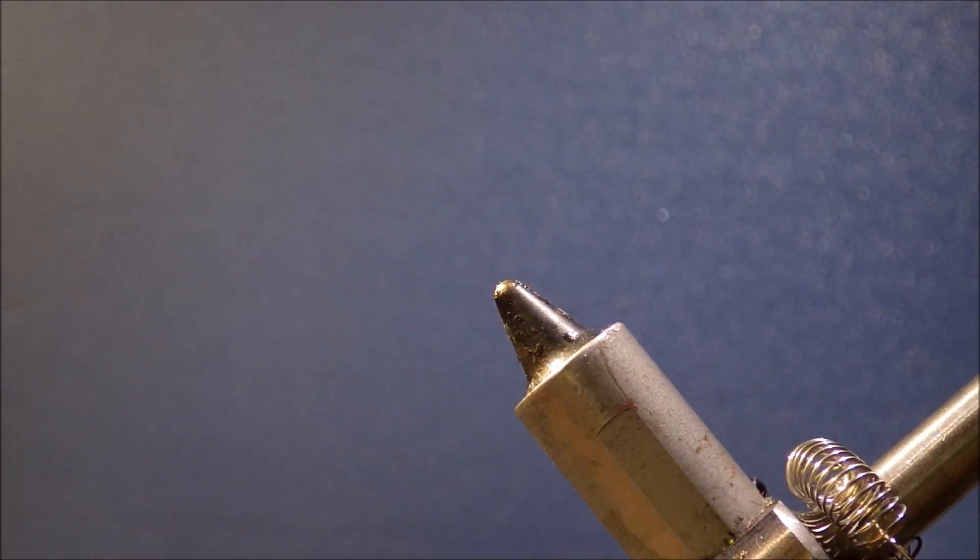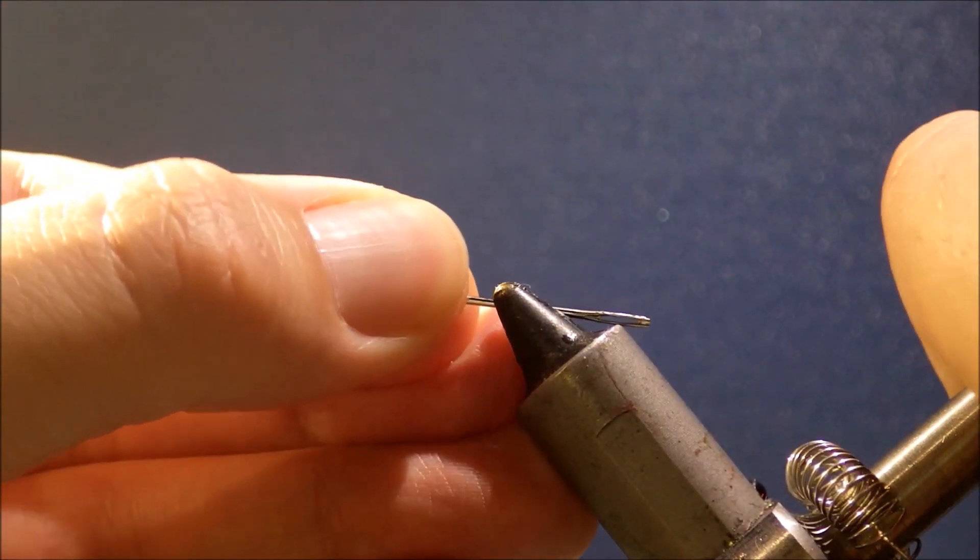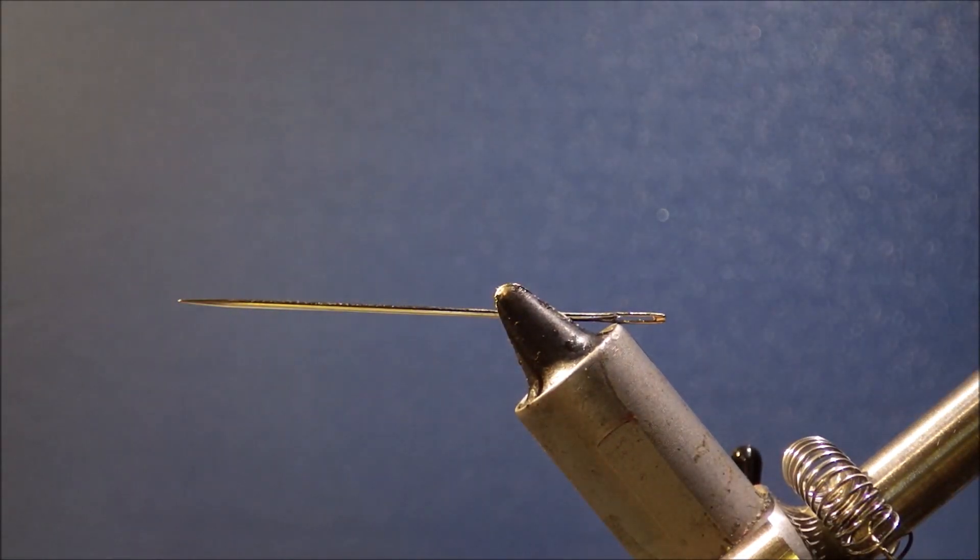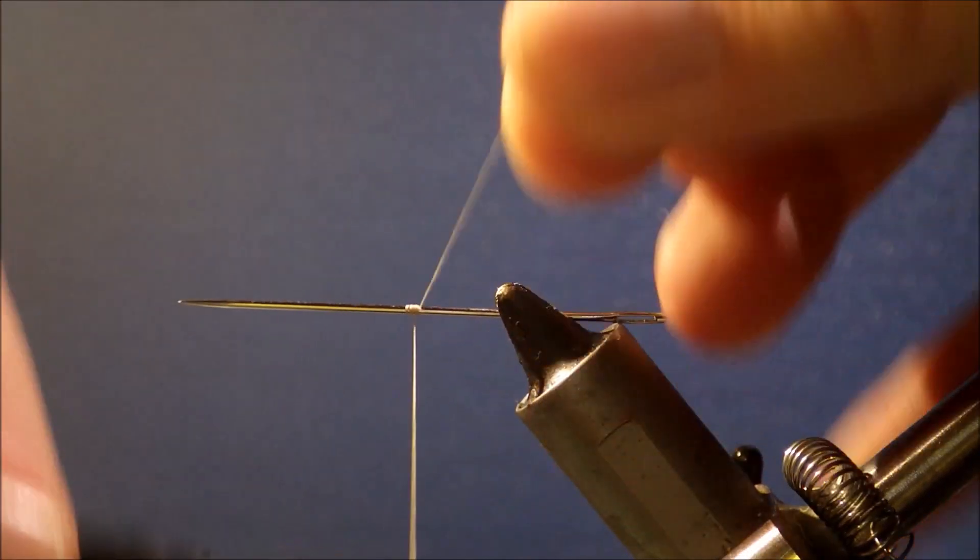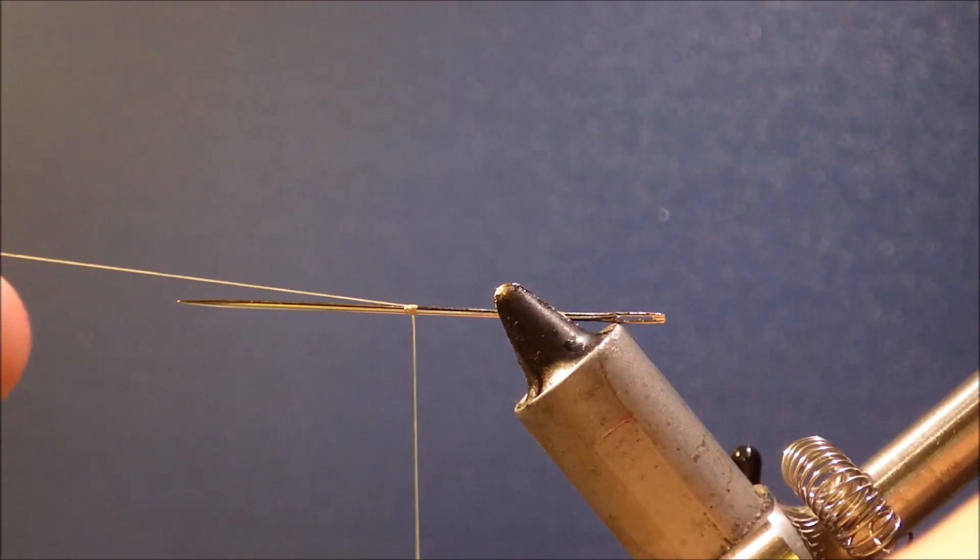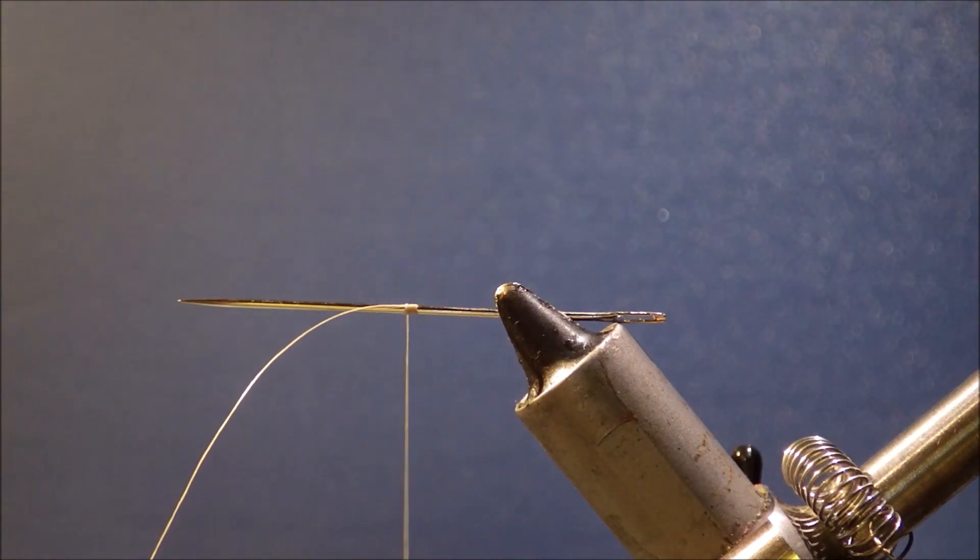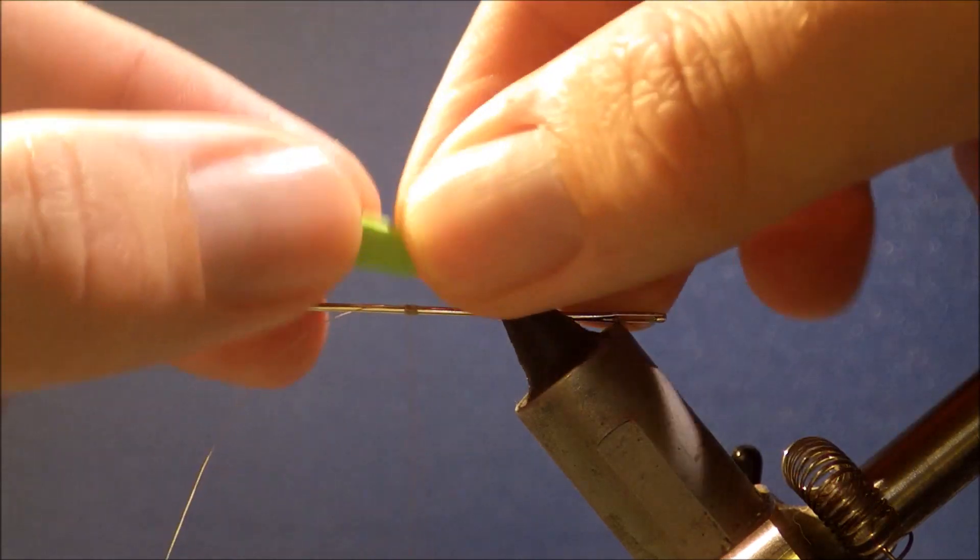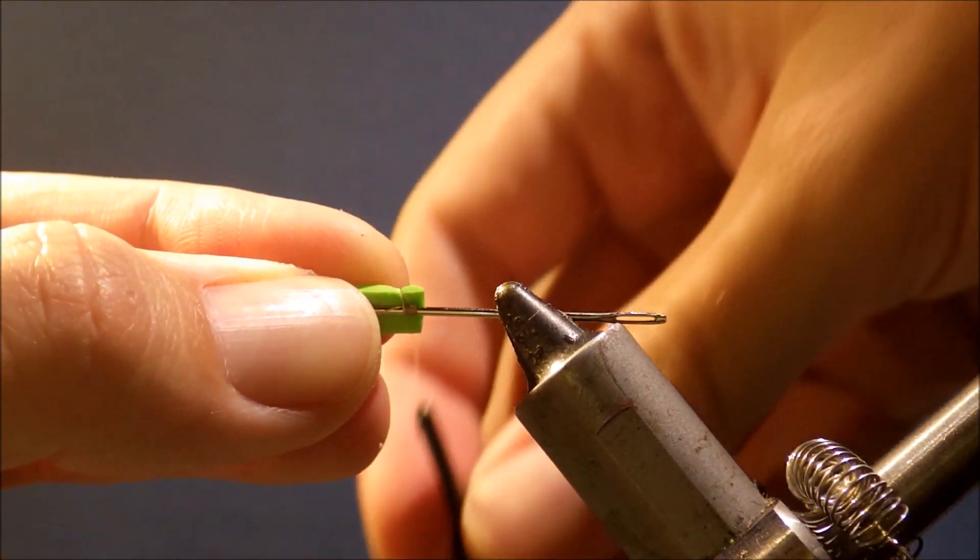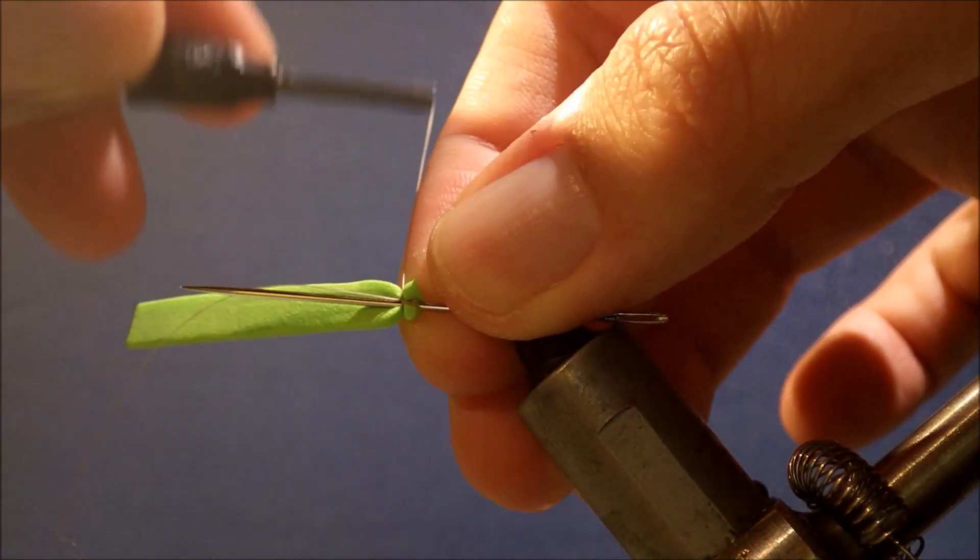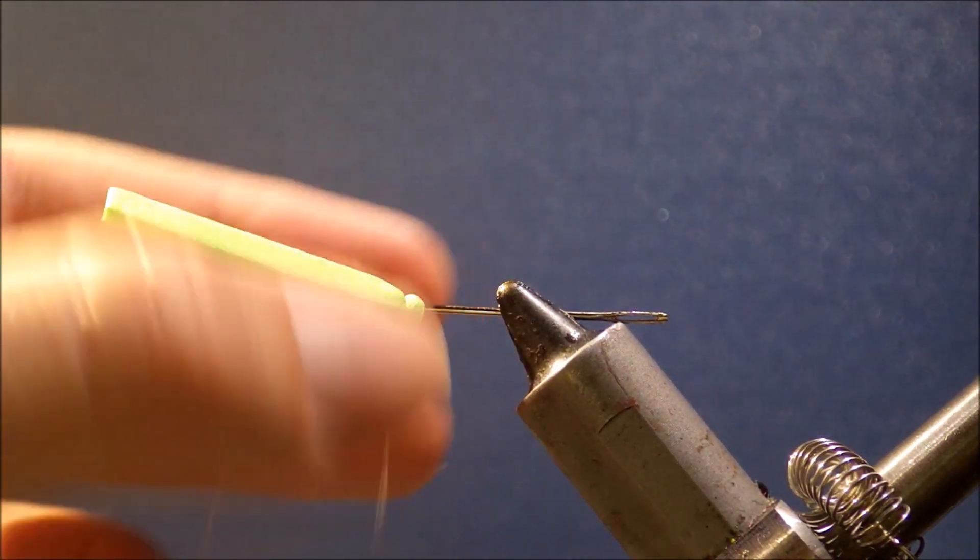First we need to make the extended body, and to do that I just take an ordinary sewing needle, stick it to my vise, and start some six-aught thread. You can use whatever colour you like, it just depends on the colour of the hopper that you're tying. And if you leave this tag end a bit long and sort of pull it back towards what will be the head end of the body, that will make things easier for you later.